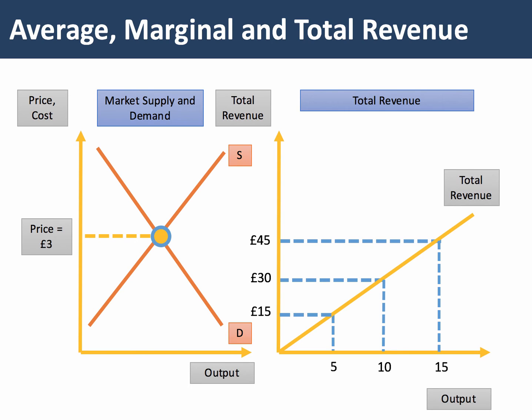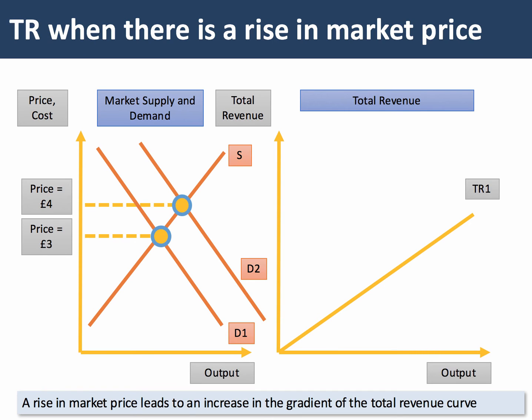Of course, that price can change. Let's take, for example, an increase in the price to £4. A rise in the market price causes an increase in the gradient of the total revenue curve from TR1 to TR2.